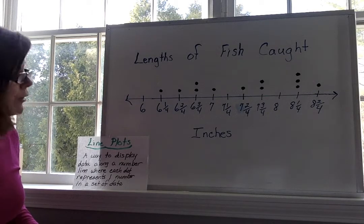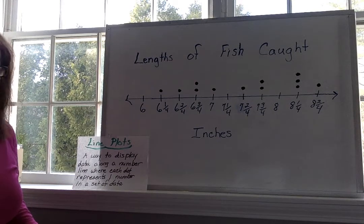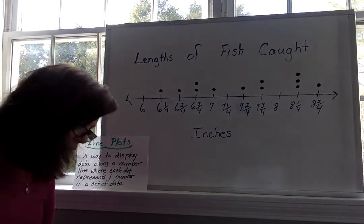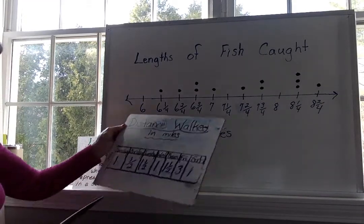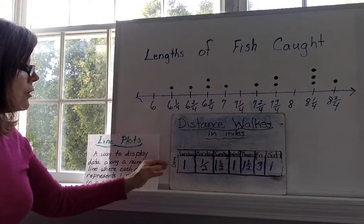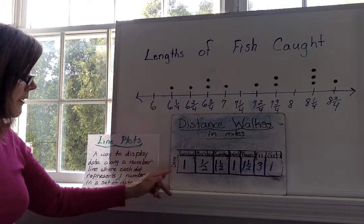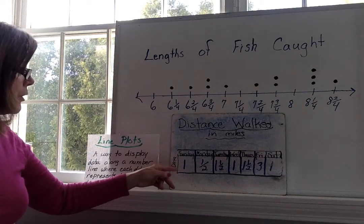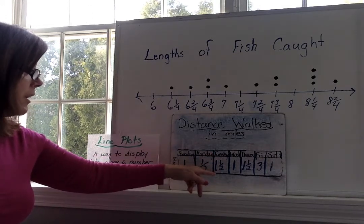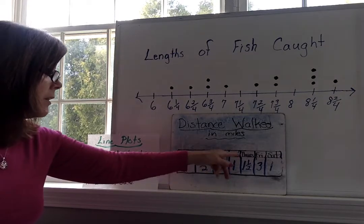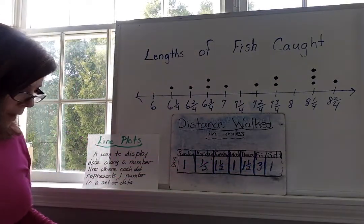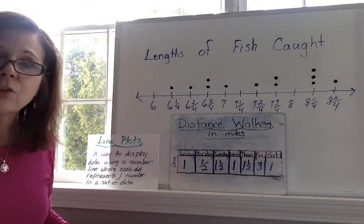Okay, so we're also going to learn about another word, and it's called the outlier. And I'm going to show you that on the next line plot. So, over here, I've got it all ready for us. On the shorter piece of paper, I have the distance walked in miles. And I have the data here, and each day of the week is represented by the number of miles that are walked. Sunday, I walked one mile. Monday, a half mile. Tuesday was a good day, because I walked one and a half miles. Wednesday, back to one. Thursday, one and a half. Friday, three miles. And then, Saturday is back to one. So, what I want to do now is take this data and put it into a line plot.